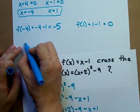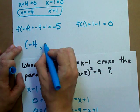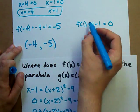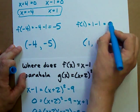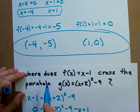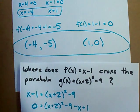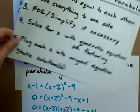So, when x is negative 4, y is negative 5. When x is 1, y is 0. And those are the two points at which the parabola intersects the line. That's stating the solution.